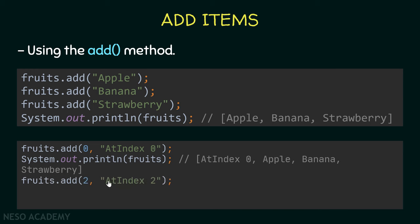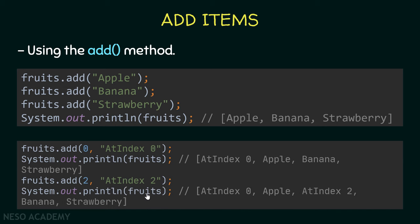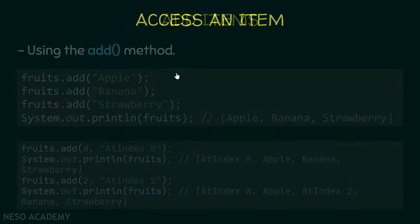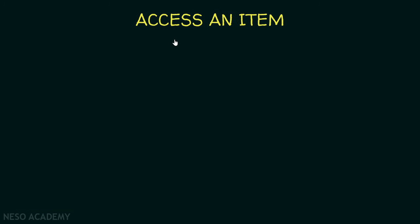For example, adding a string at index two inserts it at that position and shifts the other strings automatically. This shows the power of ArrayList — if we tried to do this with an array, we would have to manually iterate and shift elements. Now let's talk about accessing an item inside the ArrayList.